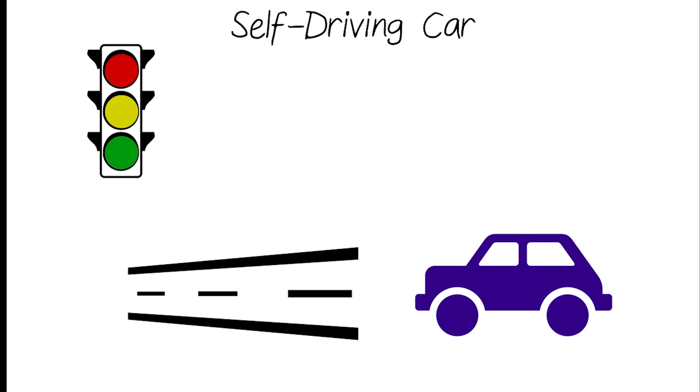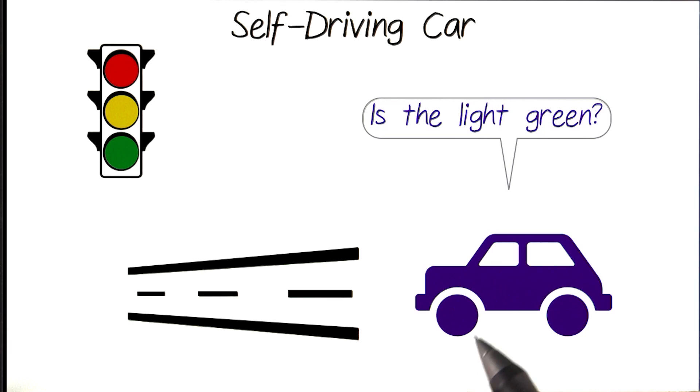Let's say we're programming a self-driving car, and the first thing we want it to do is recognize a simple traffic light and use control flow to start driving when it sees a green light.